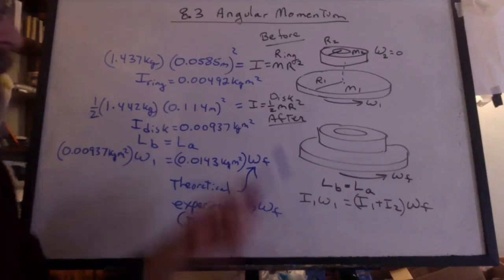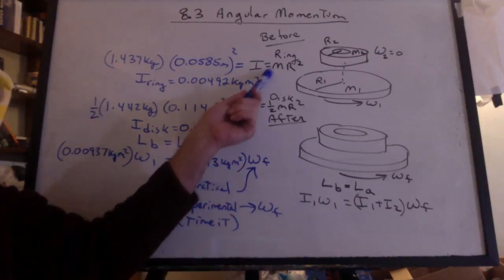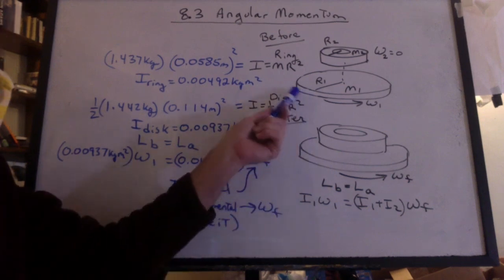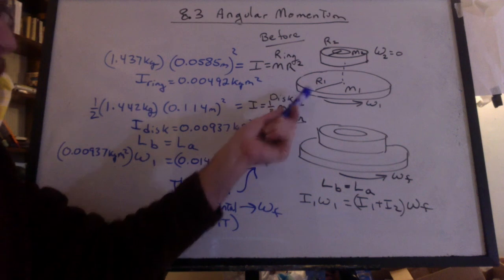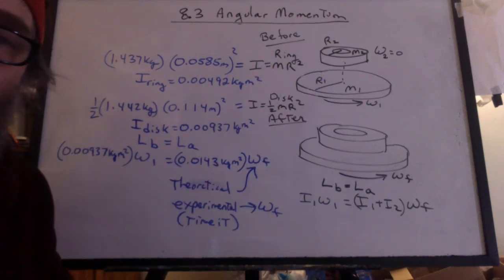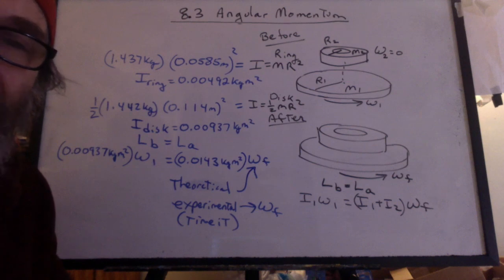So if you do the lab at home, you won't have a ring. You're going to be using a disk on a disk. And it doesn't even have to be a tuna can. You can still use your CD disk spinner and put maybe the drink coaster on top. All right, get to work, and we'll try more problems like this later.